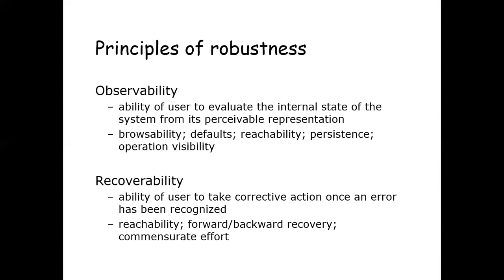The next robustness principle is recoverability — the ability to reach a desired goal after recognition of some error in a previous interaction. There are two directions in which recovery can occur: forward and backward. Forward error recovery involves acceptance of the current state and navigation from that state towards the desired state. Backward error recovery is an attempt to undo the effects of previous interaction in order to return to a prior state before proceeding. Recovery can be initiated by the system or by the user. The principle of commensurate effort states that if it is difficult to undo a given action on a state, then it should have been difficult to do in the first place.